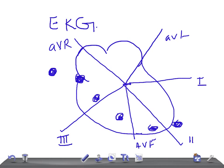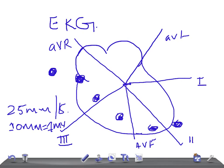When recording EKG, you should always check whether the machine is properly calibrated. Look at the speed of the paper — it should be 25 millimeters per second, which is the standard. The calibration mark should be 10 millimeters equals 1 millivolt, so that the wave height can be converted into meaningful voltage.